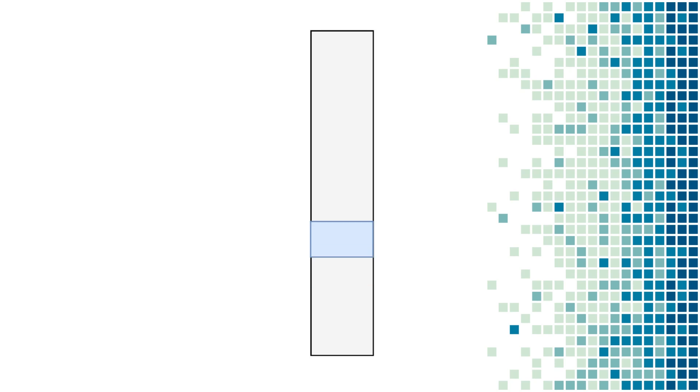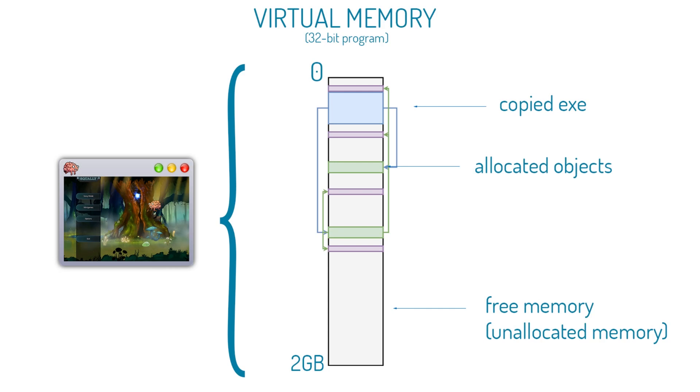Before we move on, technically I lied a little bit. The main section can theoretically be loaded anywhere in free virtual memory. Usually it loads into the exact same spot, but the OS can put it anywhere. But it doesn't really matter — once it's loaded it will stay in that spot when the program runs, and we can actually ask the operating system where it copied the EXE, which means we can super easily find this section. Jumping back to this diagram, the blue section we can track down easily, but allocated objects are random, making them much more challenging to track down.